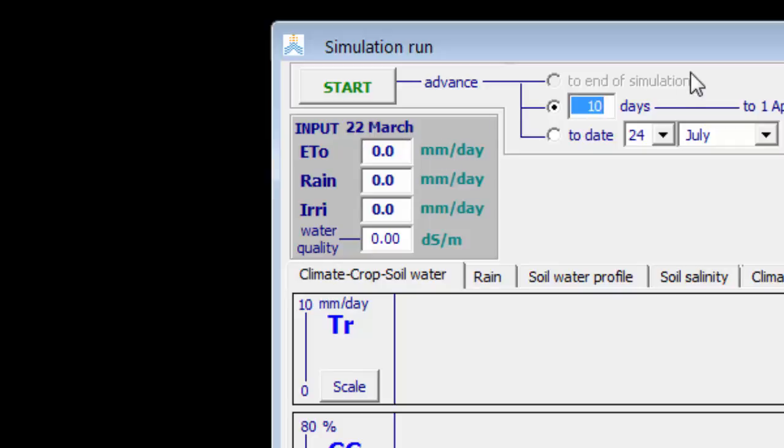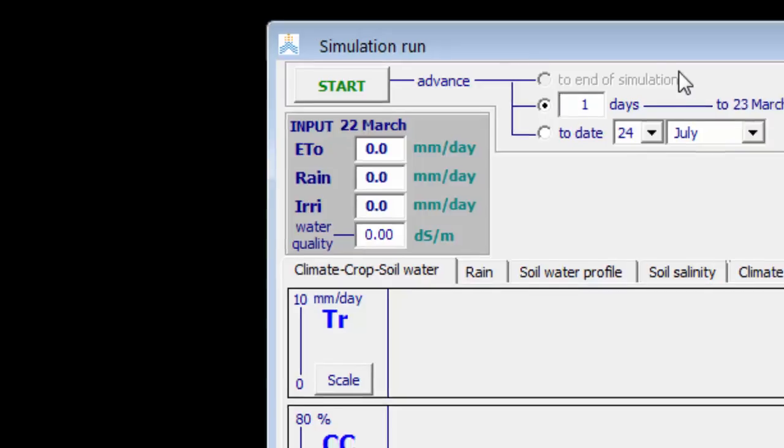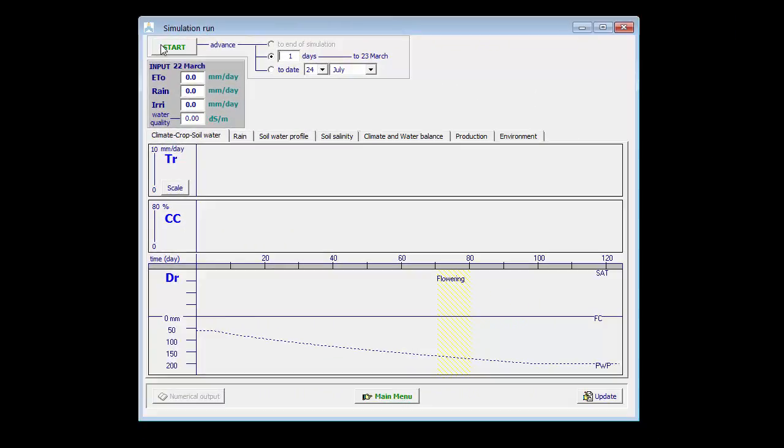I advance with a time step of one day. If I start my simulation, I see that the root zone depletion remains at zero. That is because by default the simulation starts with a soil at field capacity, and since there is no extraction of water or infiltration of water, the root zone depletion remains zero.